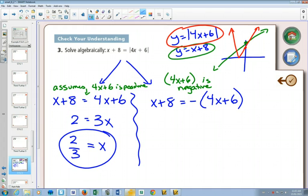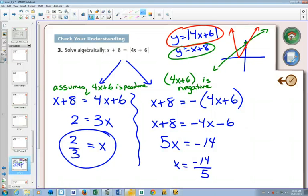And on the other one, I'd have x plus 8. Distribute the negative, negative 4x minus 6. I get my x's on one side by adding 4x, and I get x is negative 14 over 5.